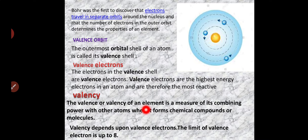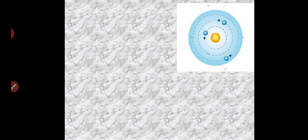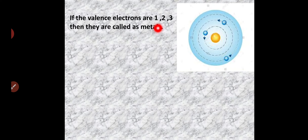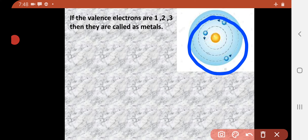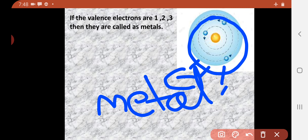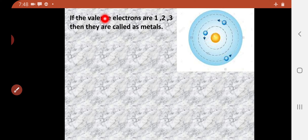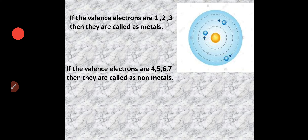Valency depends upon the valence electrons, and the limit of valence electrons is up to 8. If the last orbit contains 1, 2, or 3 electrons, then that element is called a metal. If the valence electrons are 4, 5, 6, or 7, then they are called non-metals.